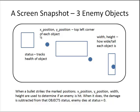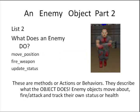And every object that represents an enemy on the screen must have this information. The second list I need is what does an enemy do — what actions does an enemy object perform. Methods like move position, which will update the position of the object on the screen, or fire weapons,